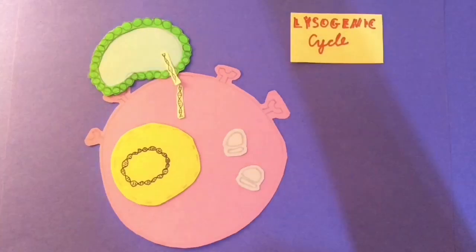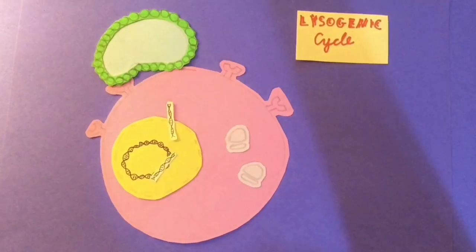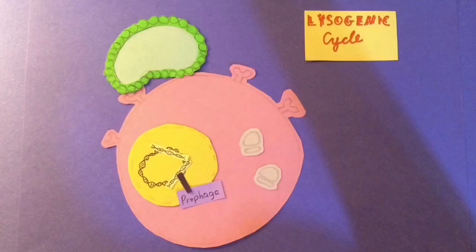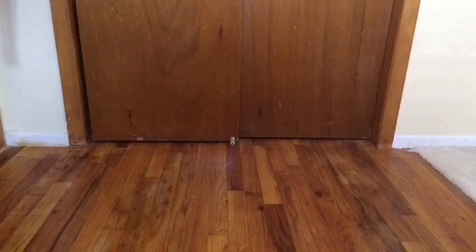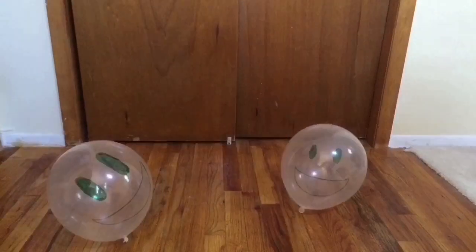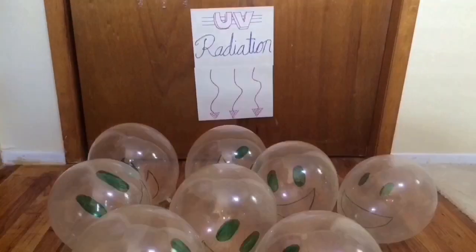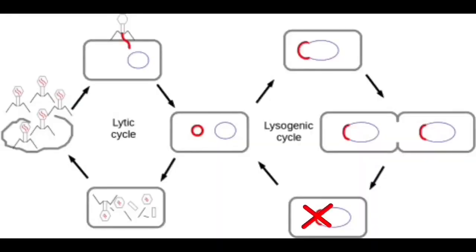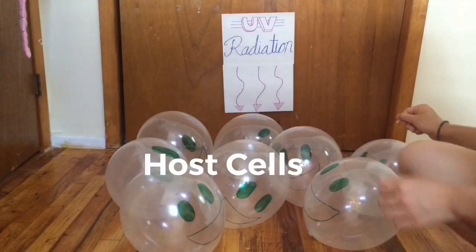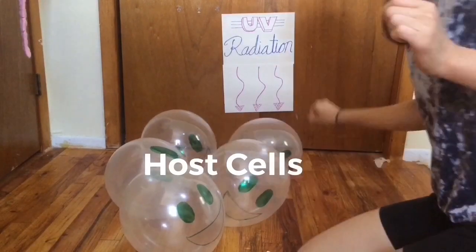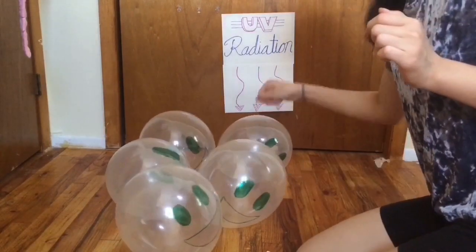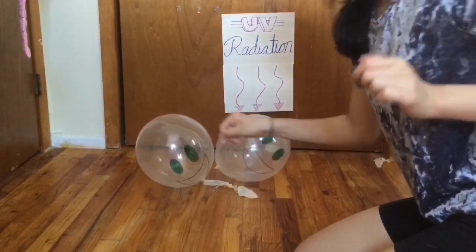In the lysogenic cycle, the virus's injected genetic material becomes a prophage and merges with the host's genome. The host carries on with its normal life, replicating, until it meets an environmental signal such as UV radiation. The repressor gene that kept the viral info quiet is weakened, and the cell switches cycles — the replicated viruses spring out and lyse the cell, just like in the lytic cycle.